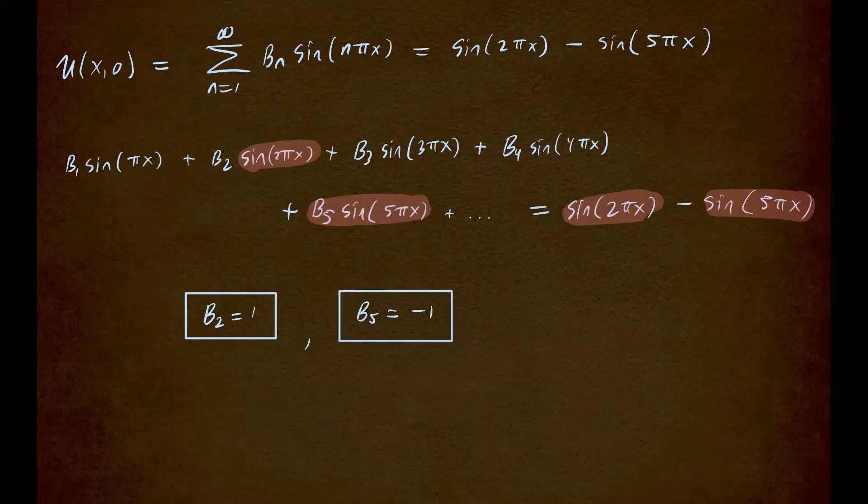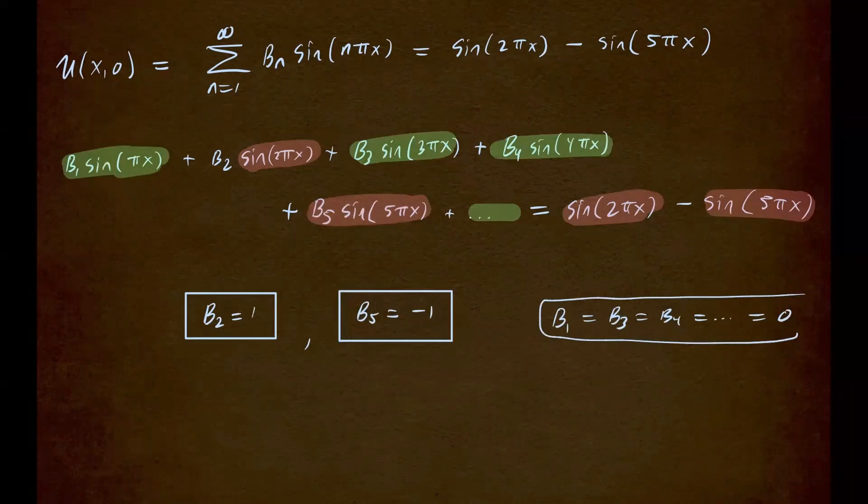And the rest, they don't have any terms on the right-hand side. For example, this one, it doesn't appear on the right-hand side. This one as well, and this one, and there are infinitely many more. So all of those guys, so b1, b3, b4, and if you keep going, they're all going to be 0. So all of these coefficients are 0. That means they do not appear in our solution.